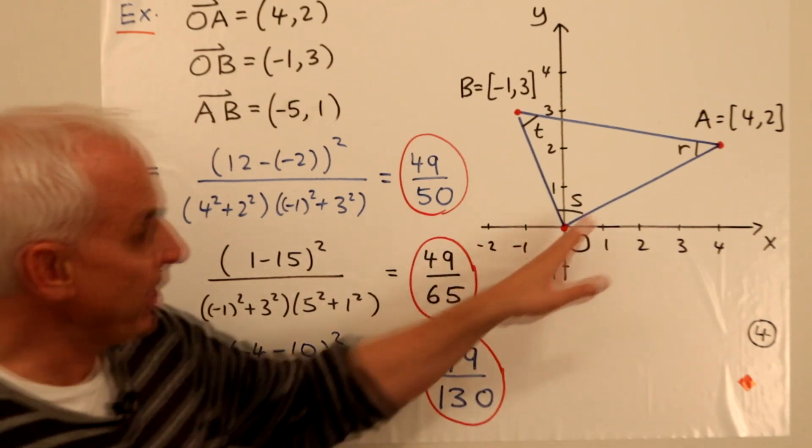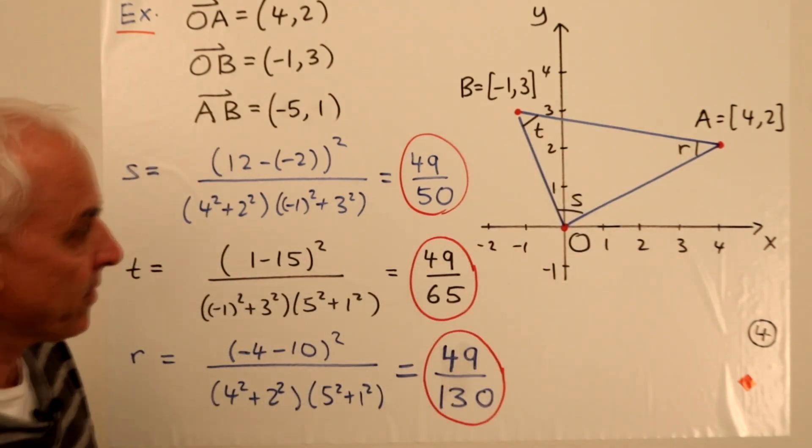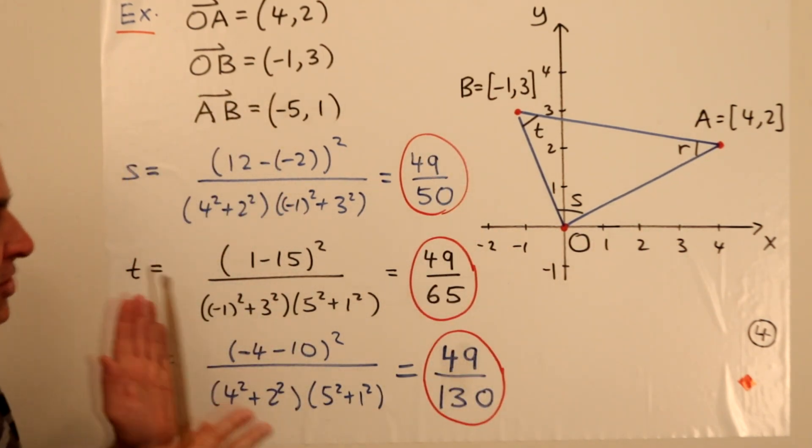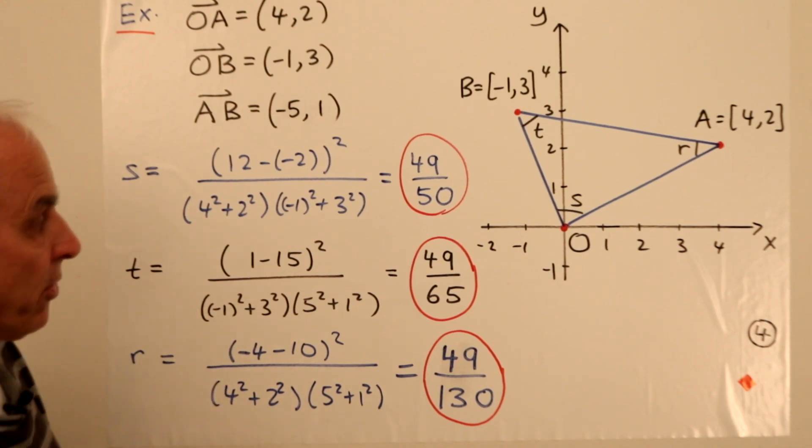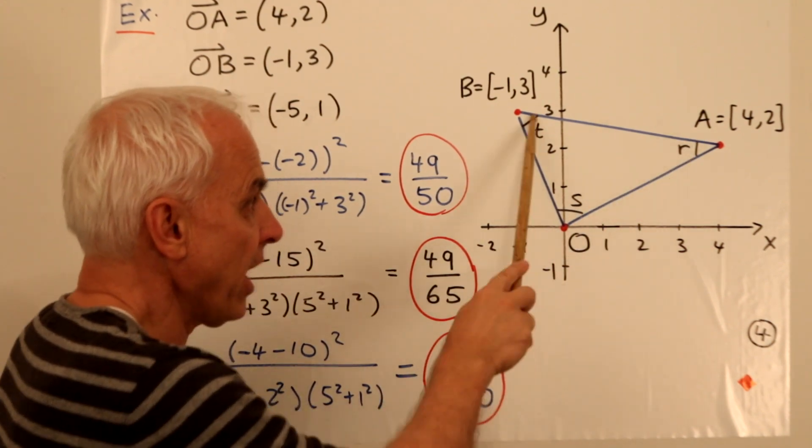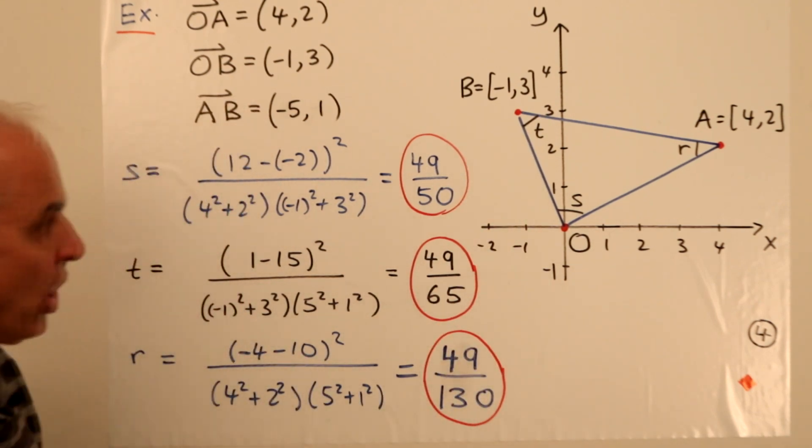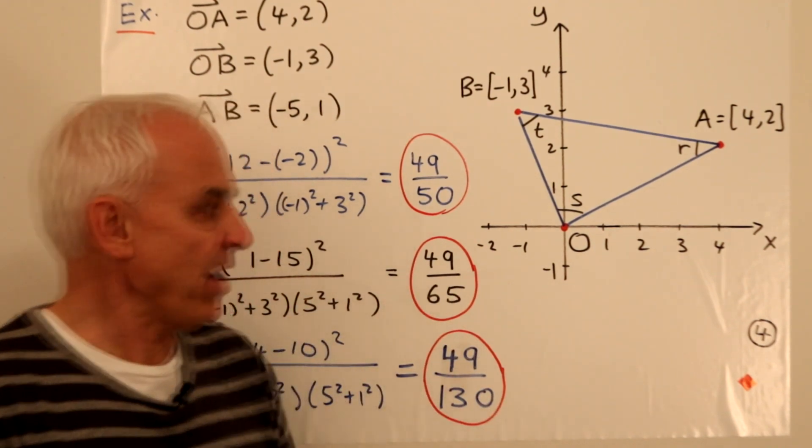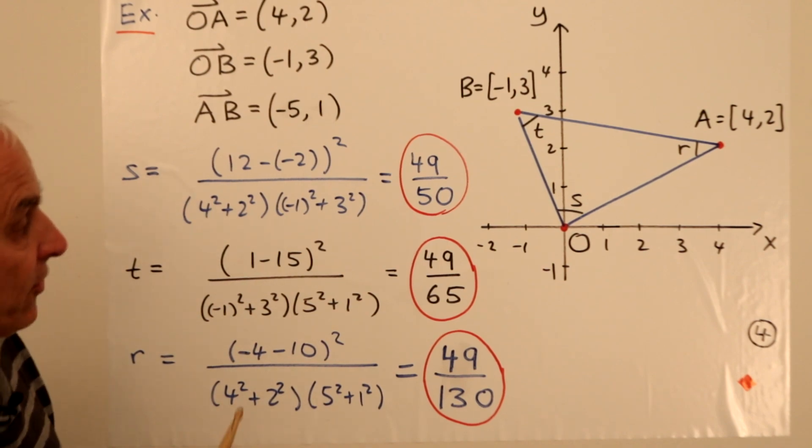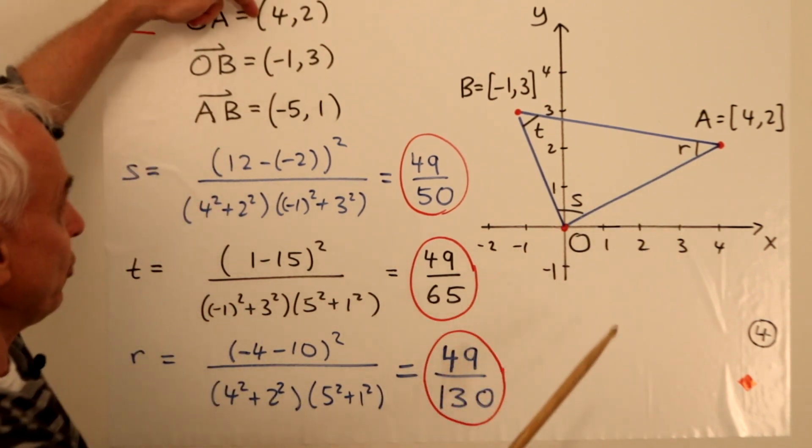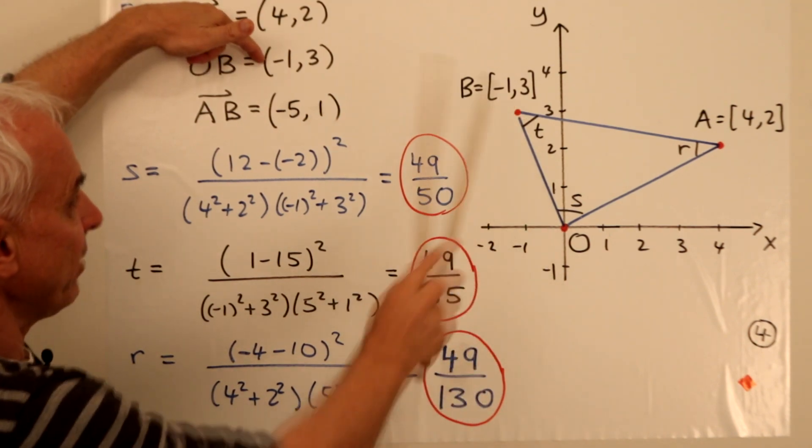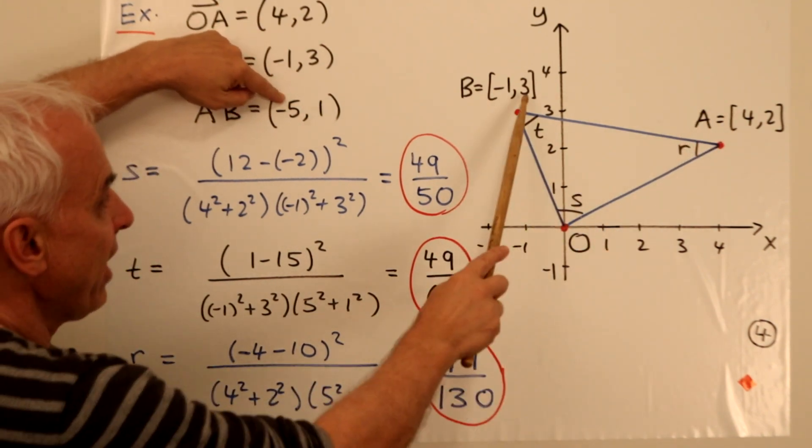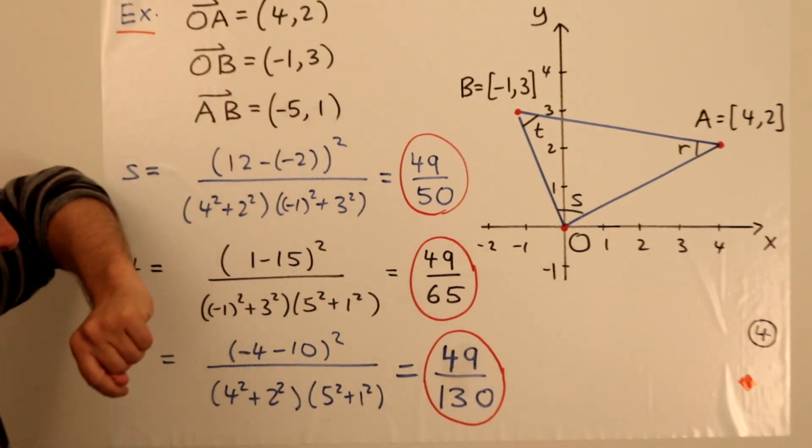OK, so here is an example in the plane, a triangle OAB. O is the origin, A is the point 4, 2, B is the point minus 1, 3. And we're interested in studying that triangle. In particular, we're interested in the spreads S, R and T at three vertices. OK, so to apply the vector form of the spread, which is what we want to get some practice at, let's first determine the vectors. So the vector OA is 4, 2. The vector OB is minus 1, 3. And the vector AB is the difference of coordinates. So we take minus 1 minus 4, it's minus 5. And 3 minus 2 is 1.